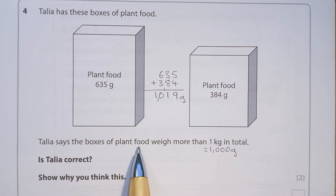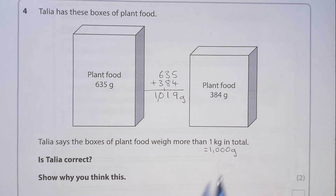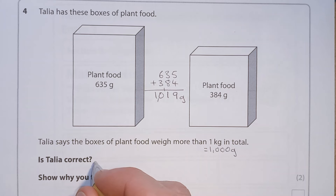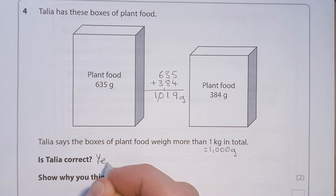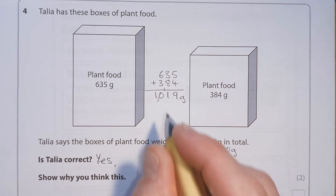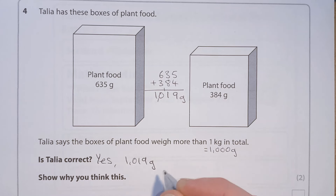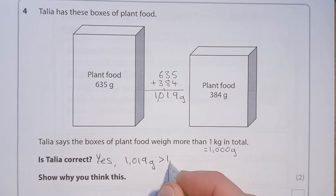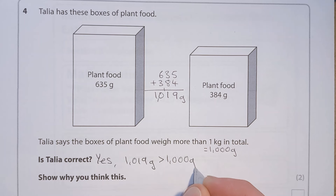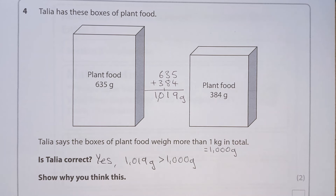Tanya says the boxes of plant food weigh more than one kilogram. Is Tanya correct? Yes, she is — because 1,019 grams is bigger than 1,000 grams.